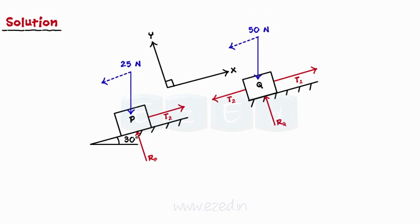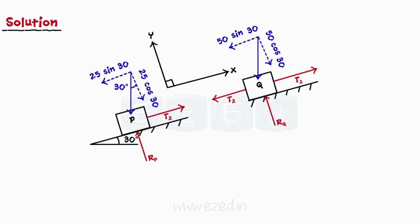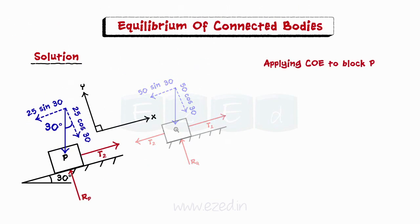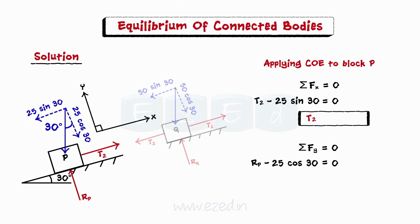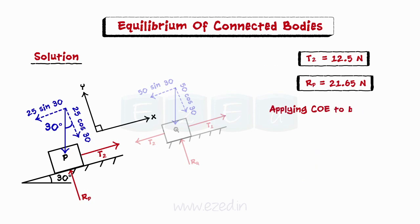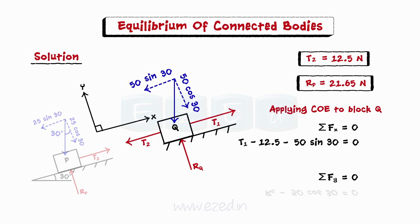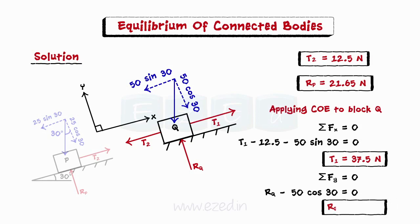We will first analyze block P to find tension in rope 2, that is T2, and then use that value to find the tension in the other rope. Applying conditions of equilibrium to block P, we calculate the summation of forces in both x and y directions and equate them to zero. We find T2 is equal to 12.5 N and RP is equal to 21.65 N. Similarly, applying conditions of equilibrium to block Q, we find T1 is equal to 37.5 N and RQ is equal to 43.3 N.